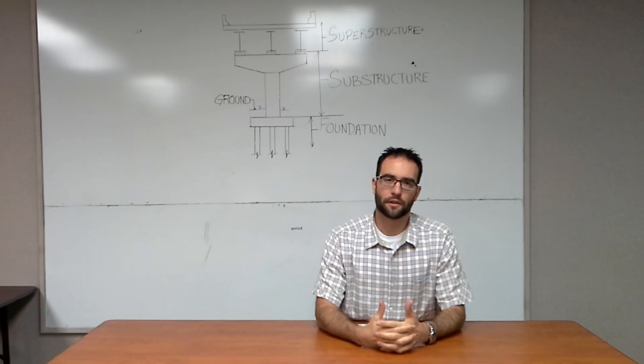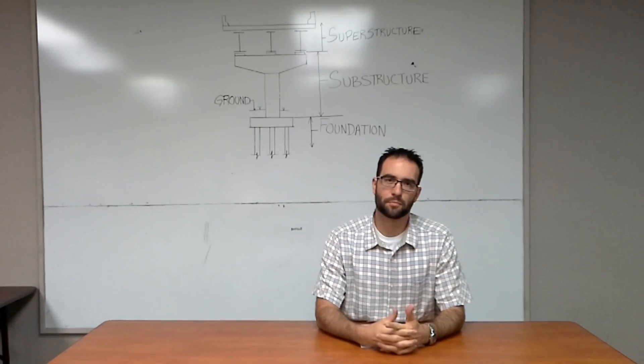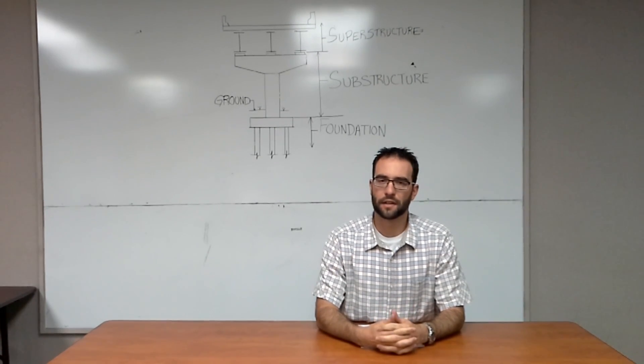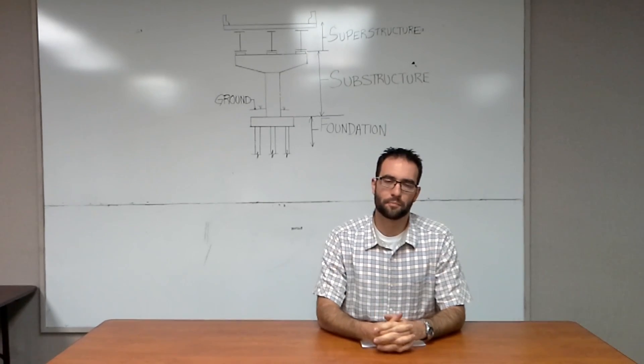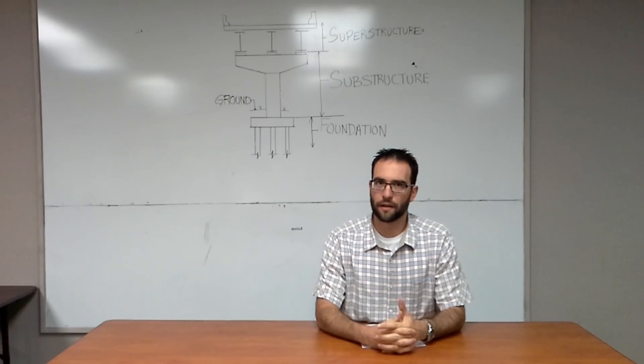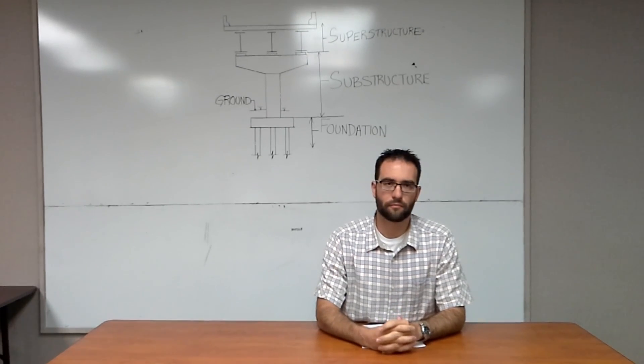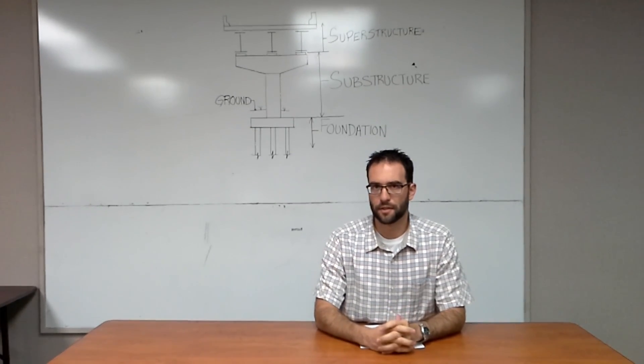Generally these are piles, but they can be spread footings or they can be drilled shafts. What you see behind me is a pile cap with piles extended into the ground. Generally the piles are made of steel or concrete, and that is the anatomy of a bridge.